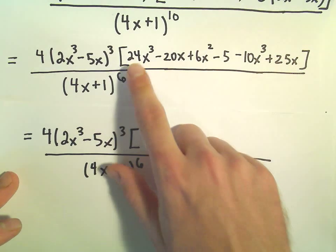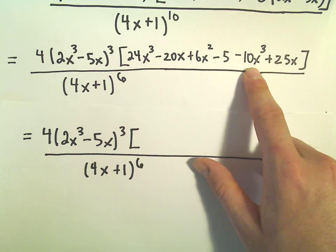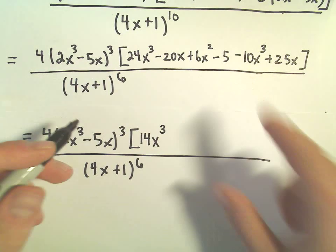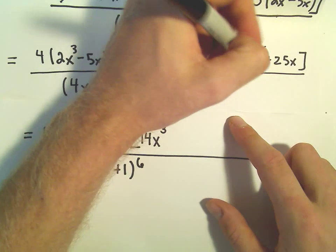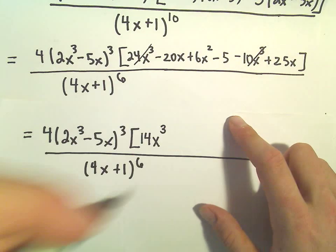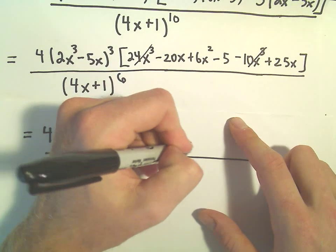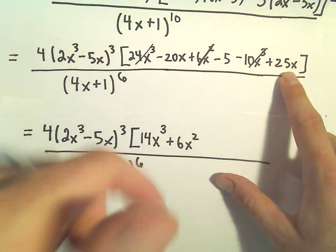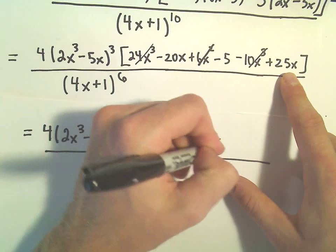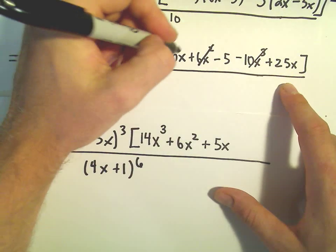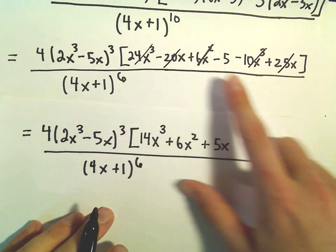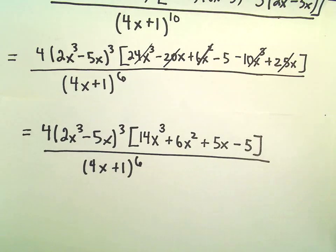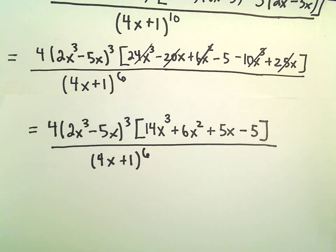So if we simplify what's in the brackets, we've got 24x cubed minus 10x cubed, that'll leave us with 14x cubed. Let's do the squares next. So I see a positive 6x squared. We've got negative 20x and positive 25x, so that'll be positive 5x. And then we're left with the minus 5.